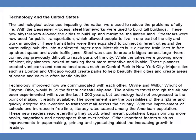Technology and the United States. The technological advances impacting the nation were used to reduce the problems of city life. With the Bessemer process, steel frameworks were used to build tall buildings. These new skyscrapers allowed cities to build up and maximize limited land. Streetcars were now used for public transportation, which allowed people to live in one part of the city and work in another. These transit links were expanded to connect different cities and surrounding suburbs into a larger collected area.